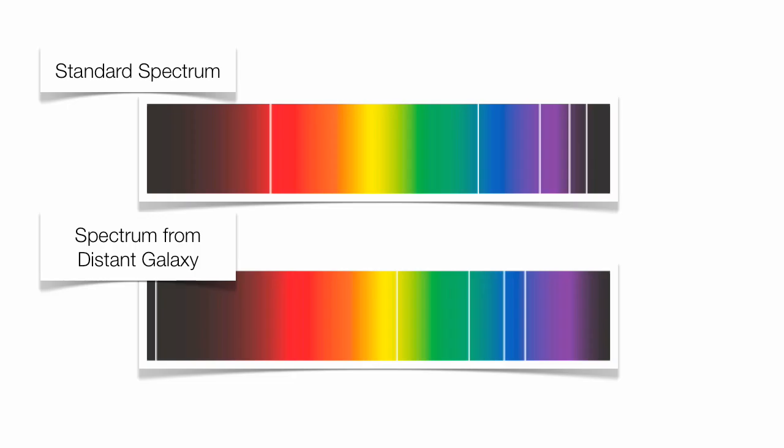This is evidence that supports the Big Bang actually occurred. When objects are moving away from us, the wavelength gets stretched out. If the wavelength gets longer, the color red is associated with longer wavelength. When things are moving away from us, we call that a red shift.